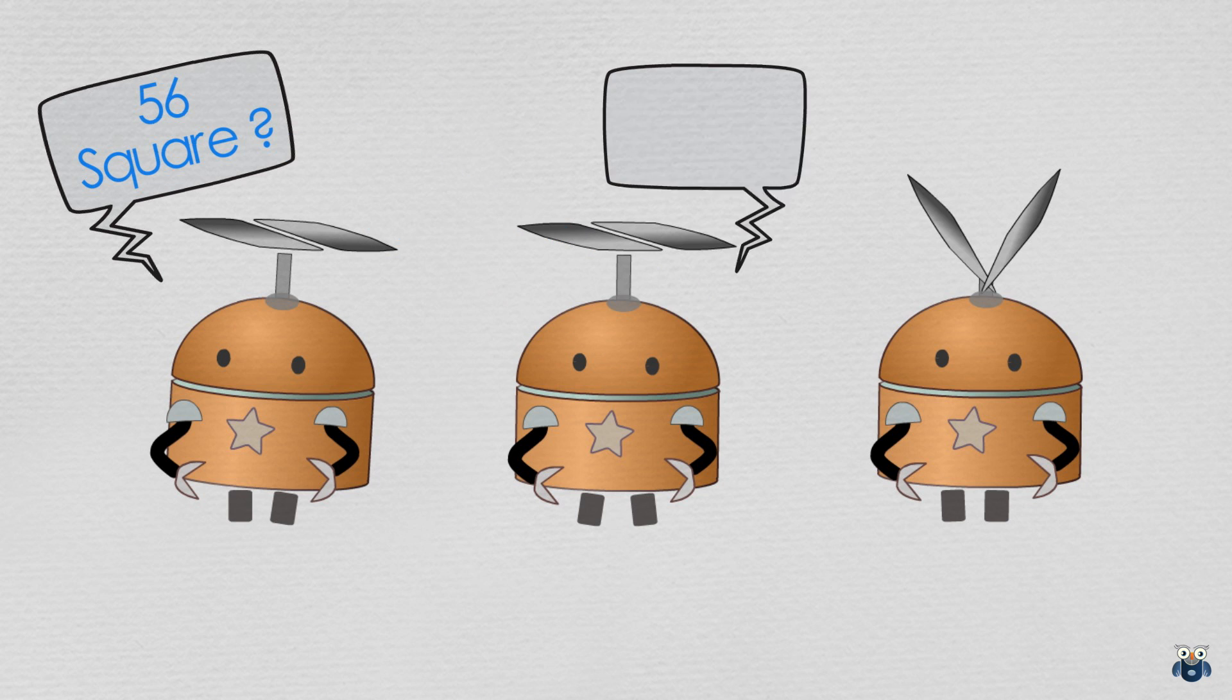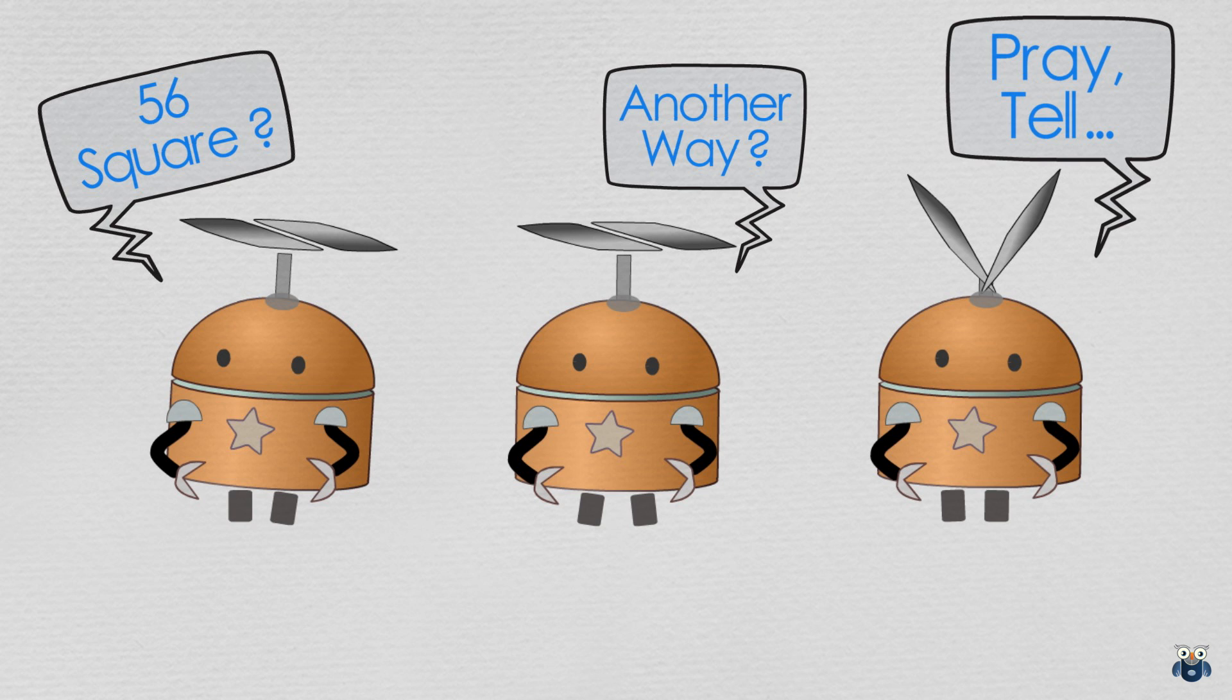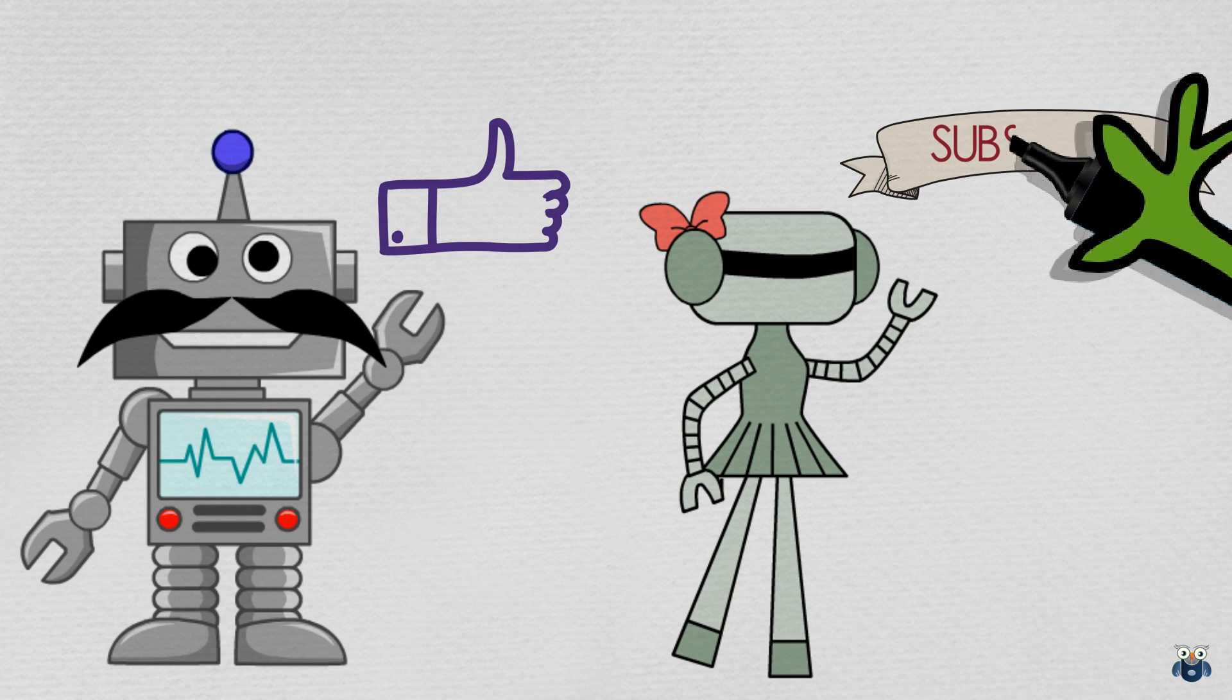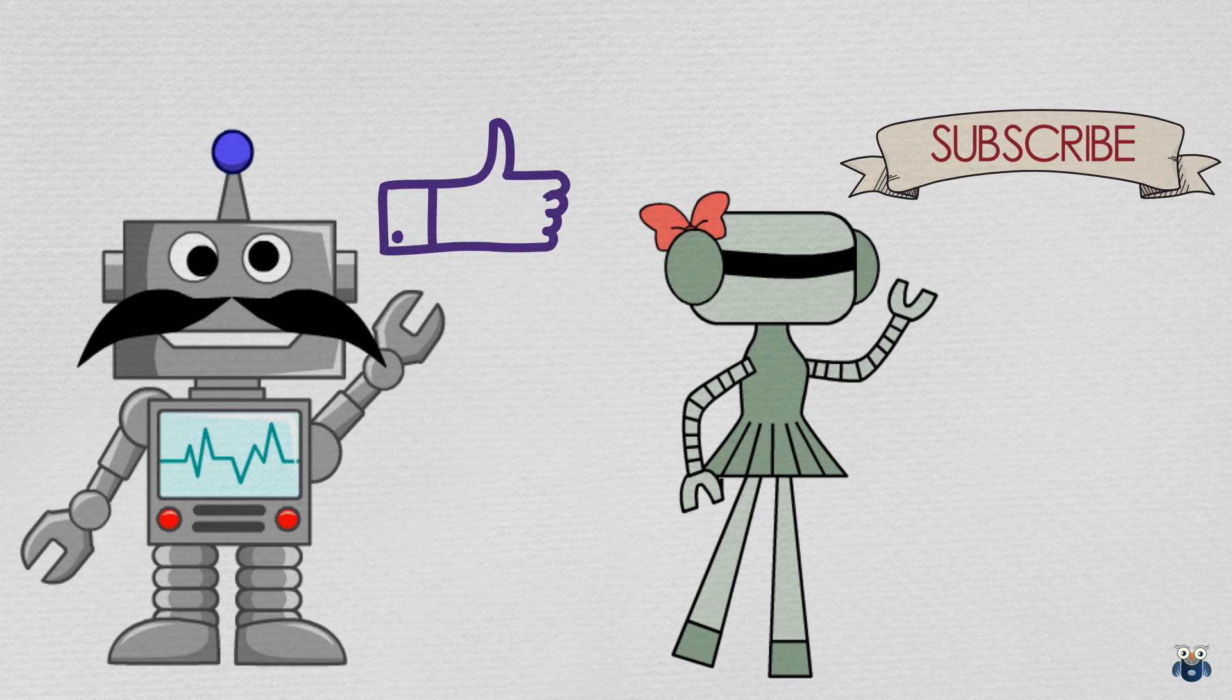But hey wait a minute you say, is there a quicker way to find the square of 56? Yes there is and I will discuss this method in another video. So this brings us to the end of this session. Please give us a thumbs up if you found it useful. And do send us comments and questions, we would love to hear from you. Thanks a lot guys and bye for now.